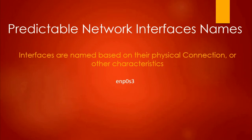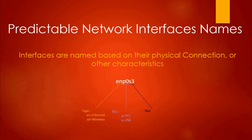At the beginning we have the type — 'en' here means ethernet, and there are a couple of other designations you will run into as well, like 'wl' for wireless LAN or Wi-Fi. 'p0' refers to the bus — in this case PCI bus zero. 's3' refers to slot three, the physical slot on the motherboard. With USB devices, there are some other parts of the name you might see, like the port the device is plugged into.